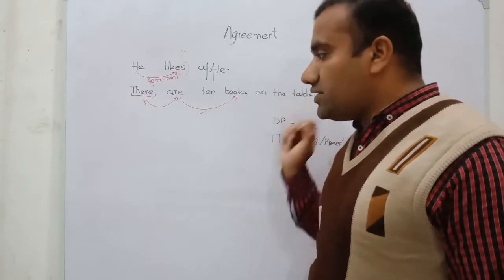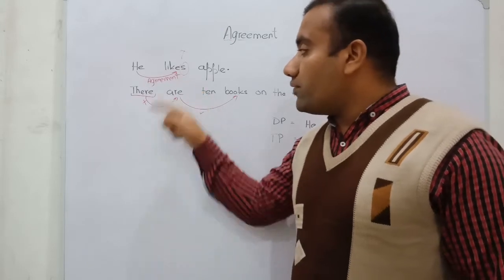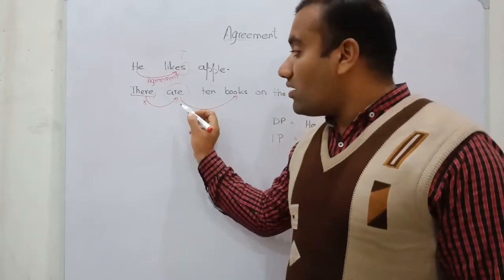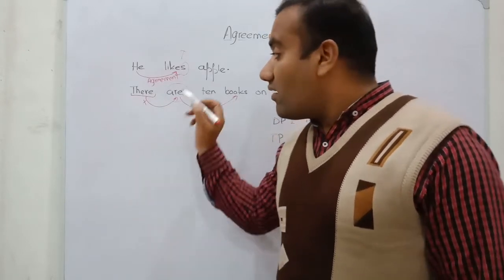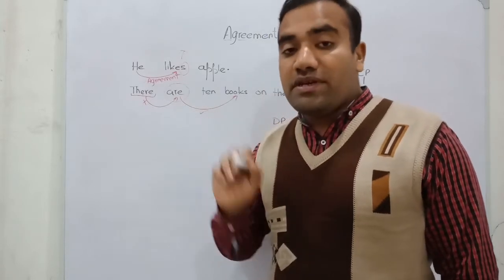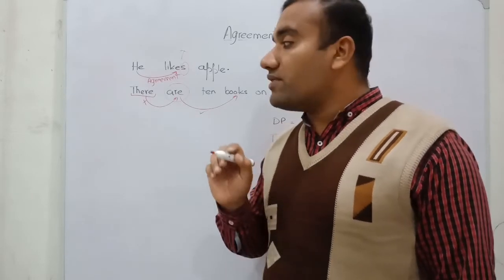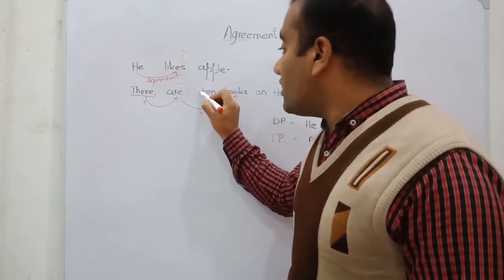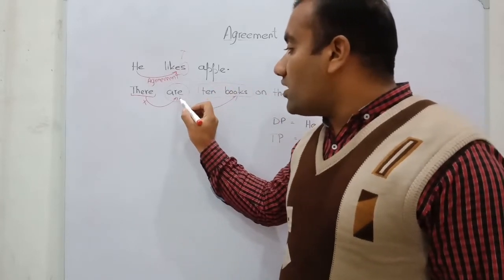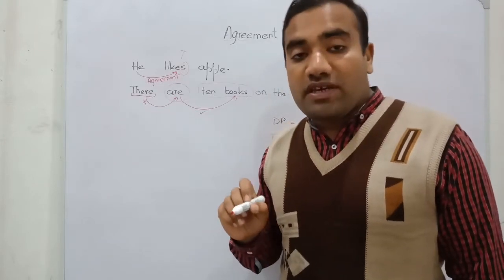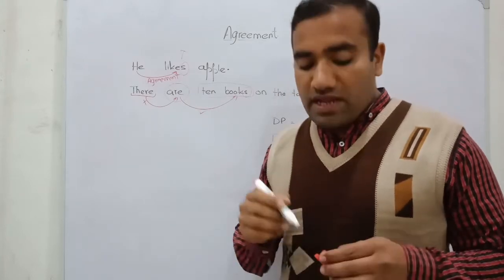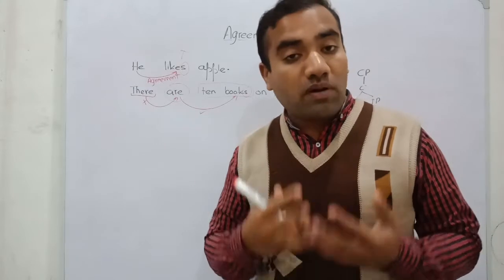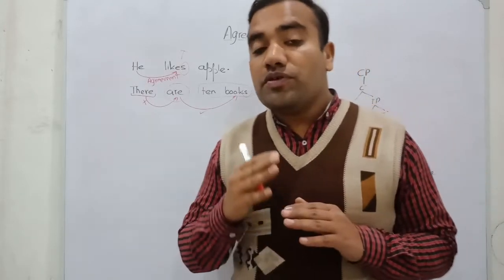See another example: 'There are 10 books on the table.' In this example we have the finite T, that is 'are', and 'books' is the complement of the V. But 'are' did not agree with 'there' — it did not agree with the DP in the specifier of the TP. Rather, it agrees with the lower complement of the V, that is 'books.' We have a problem here, and what is the solution to that problem? I want to tell you what is the solution of that particular problem in English language.